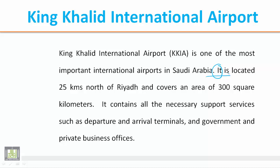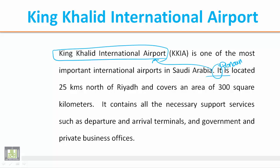ما هو الاسم الذي يمكن أن يستخدم بدلاً من هذا الضمير دون تغيير معنى الجملة. We will find that 'it is located 25 km north of Riyadh' — we are talking about King Khaled International Airport. So 'it' is the pronoun and 'King Khaled International Airport' is the noun. We can say 'it is located 25 km north of Riyadh' or 'King Khaled International Airport is located 25 km north of Riyadh.'